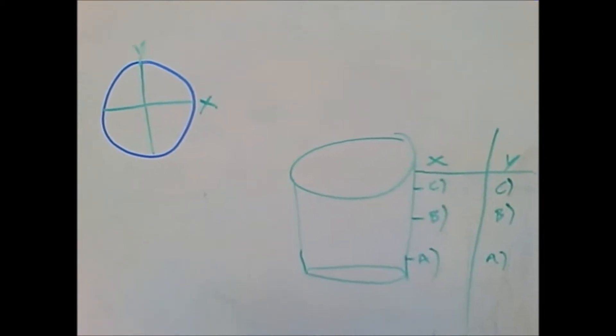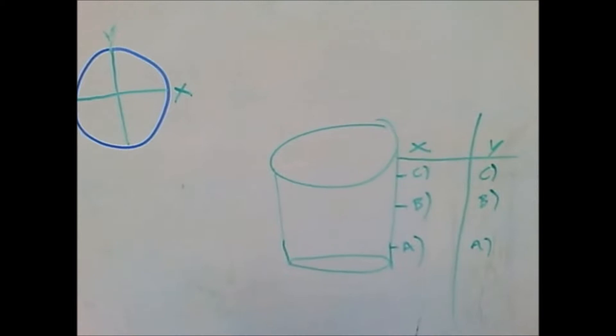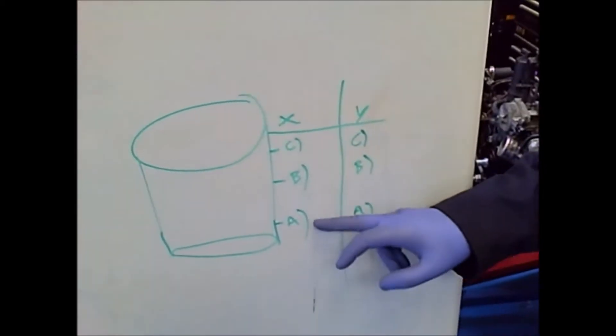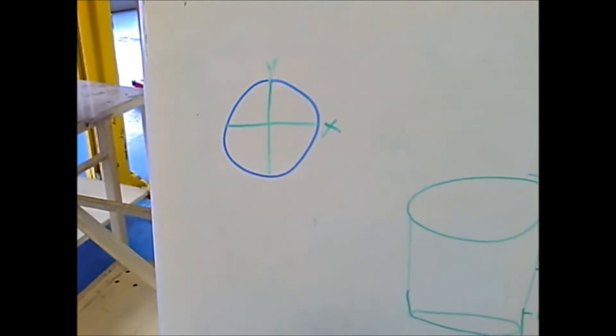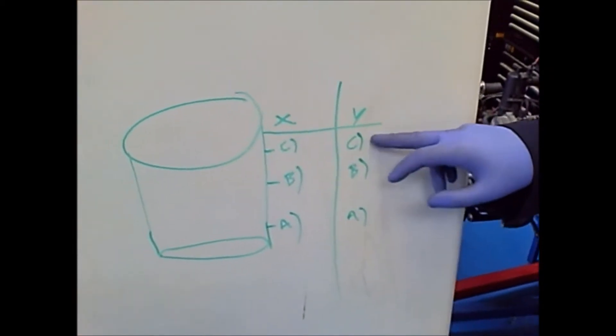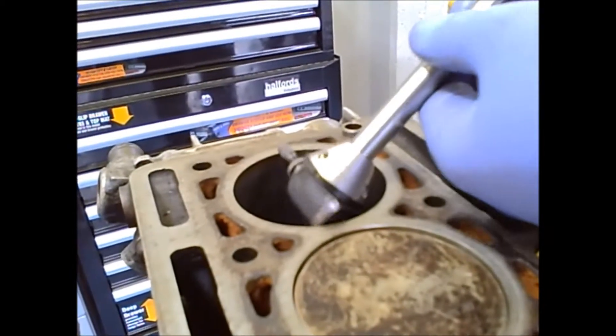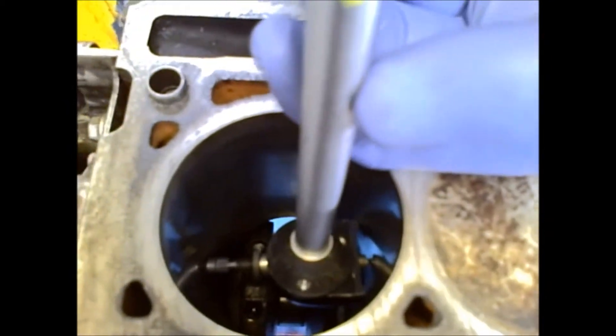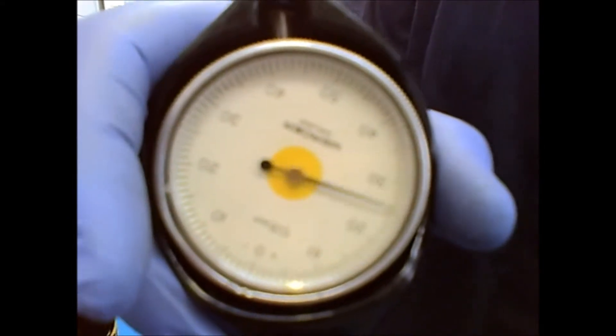Now we will have to move back over to the engine block. There are three points across two axes that we must check: points A, B and C across the X axis and points A, B and C across the Y axis. Insert the gauge at points A across the X axis and move in a sweeping motion to find the lowest reading on the gauge. This is the width of the bore at that point.